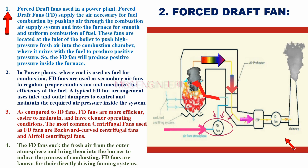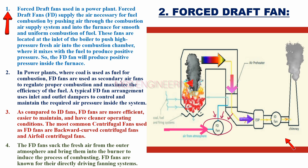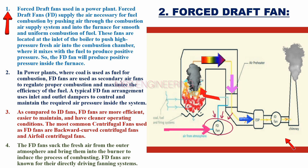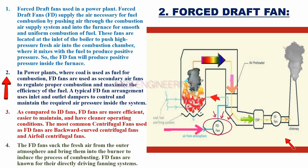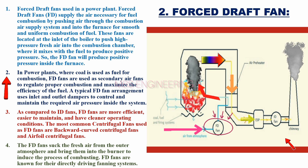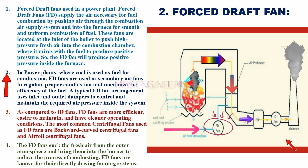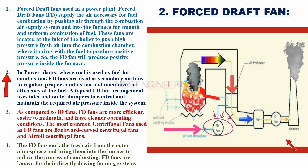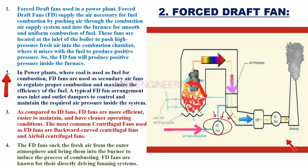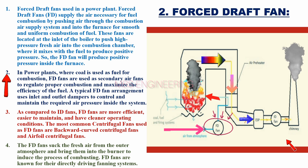Forced Draft Fans supply the air necessary for fuel combustion by pushing air through the combustion air supply system and into the furnace for smooth and uniform combustion of fuel. In power plants where coal is used as fuel for combustion, FD fans are used as secondary air fans to regulate proper combustion and maximize the efficiency of the fuel. A typical FD Fan arrangement uses inlet and outlet dampers to control and maintain the required air pressure inside the system.